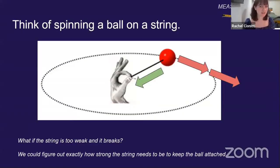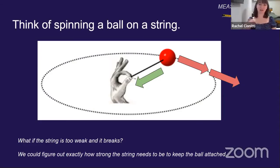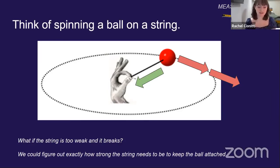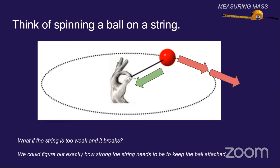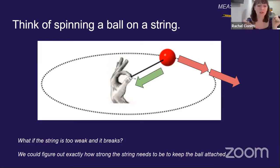Think of another example: a spinning ball on a string. If you have a ball attached to a string and you spin it around, if the string is too weak it might break and the ball is just going to go flying. So you can keep using different strengths of strings until you find the exact right strength to hold the ball in orbit without breaking. If you know the ball — how fast it's moving and its mass — then you know how strong the string exactly needs to be.